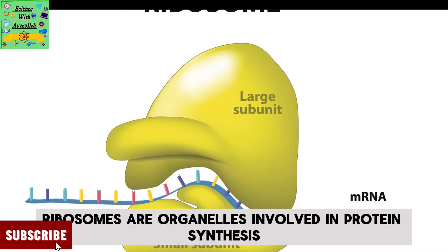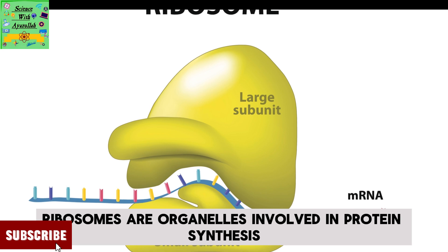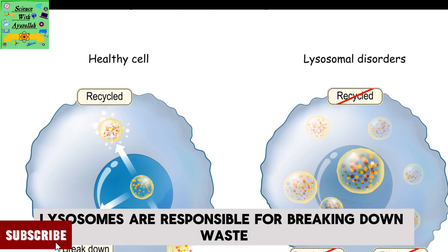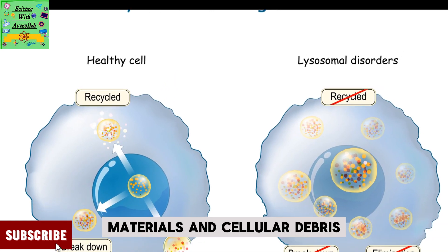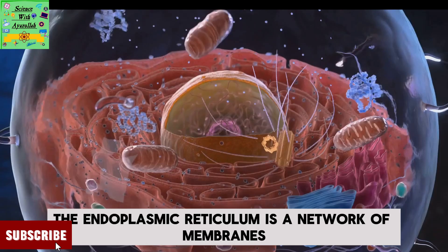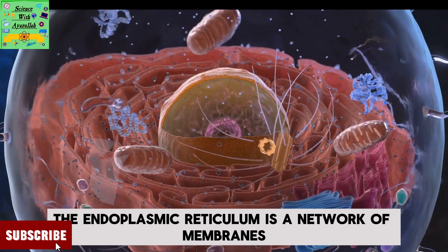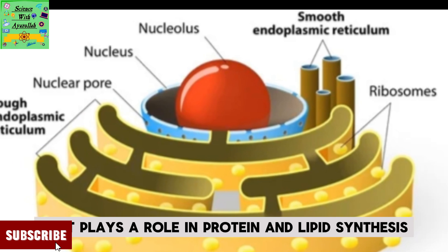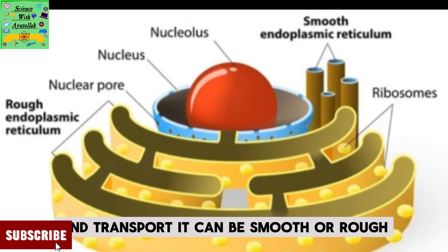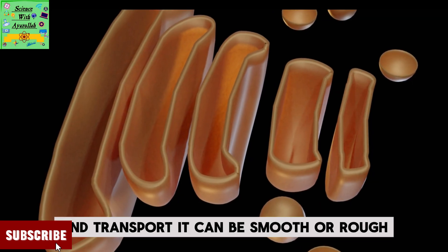Ribosomes are organelles involved in protein synthesis. Lysosomes are responsible for breaking down waste materials and cellular debris. The endoplasmic reticulum is a network of membranes that plays a role in protein and lipid synthesis and transport. It can be smooth or rough.